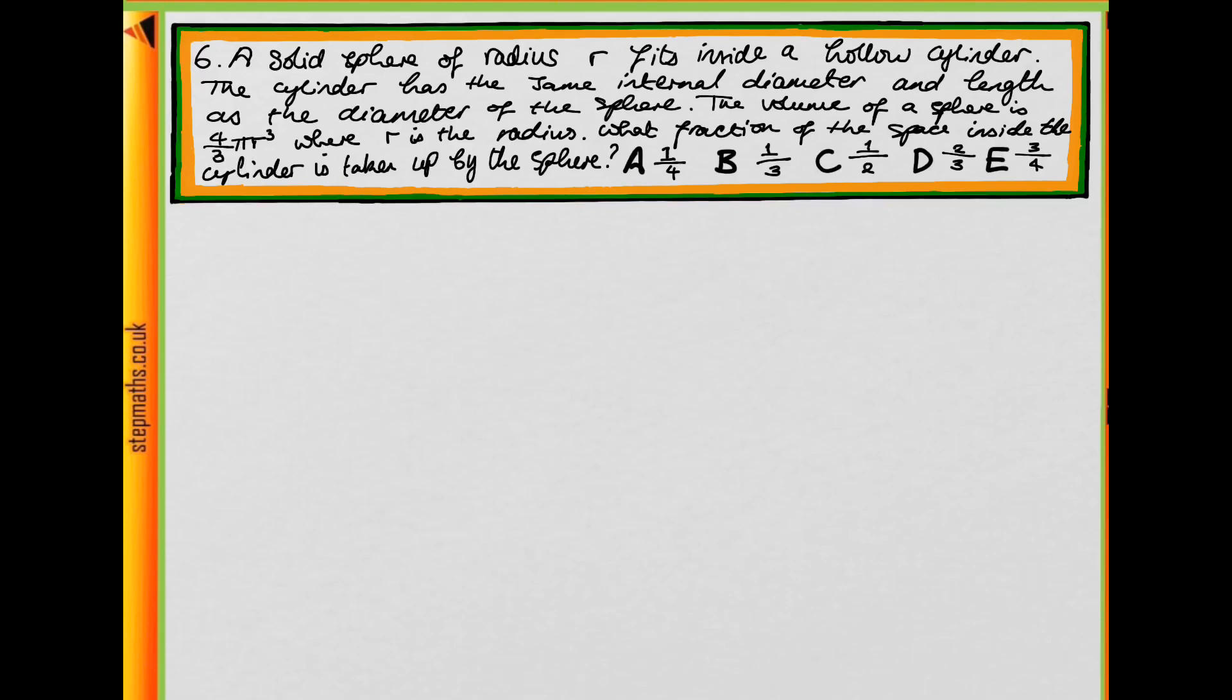The volume of the sphere is given as 4/3 πr³ where r is the radius. We want to know the fraction of the space inside the cylinder which is taken up by the sphere.